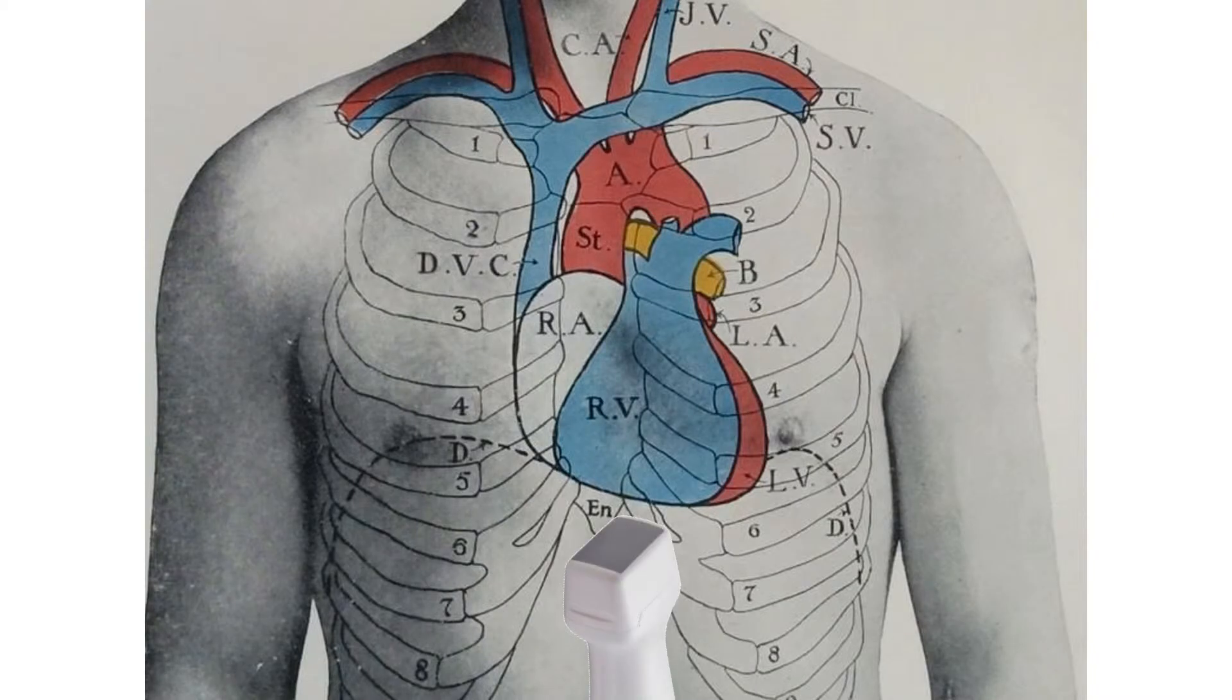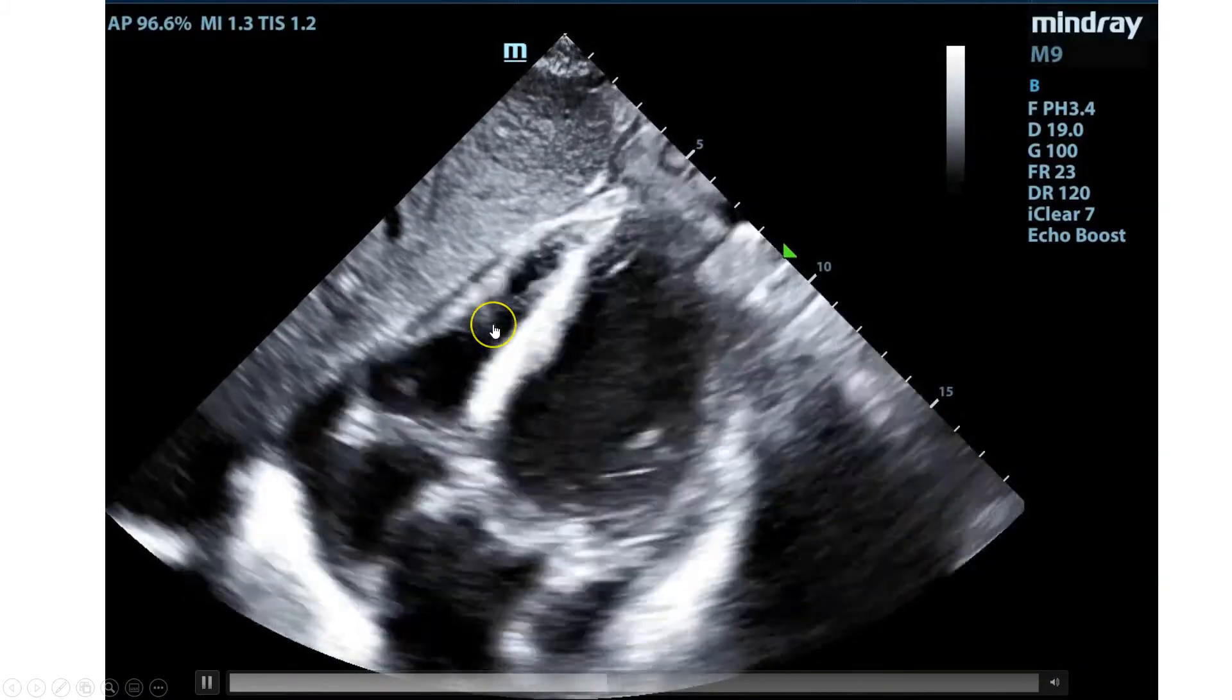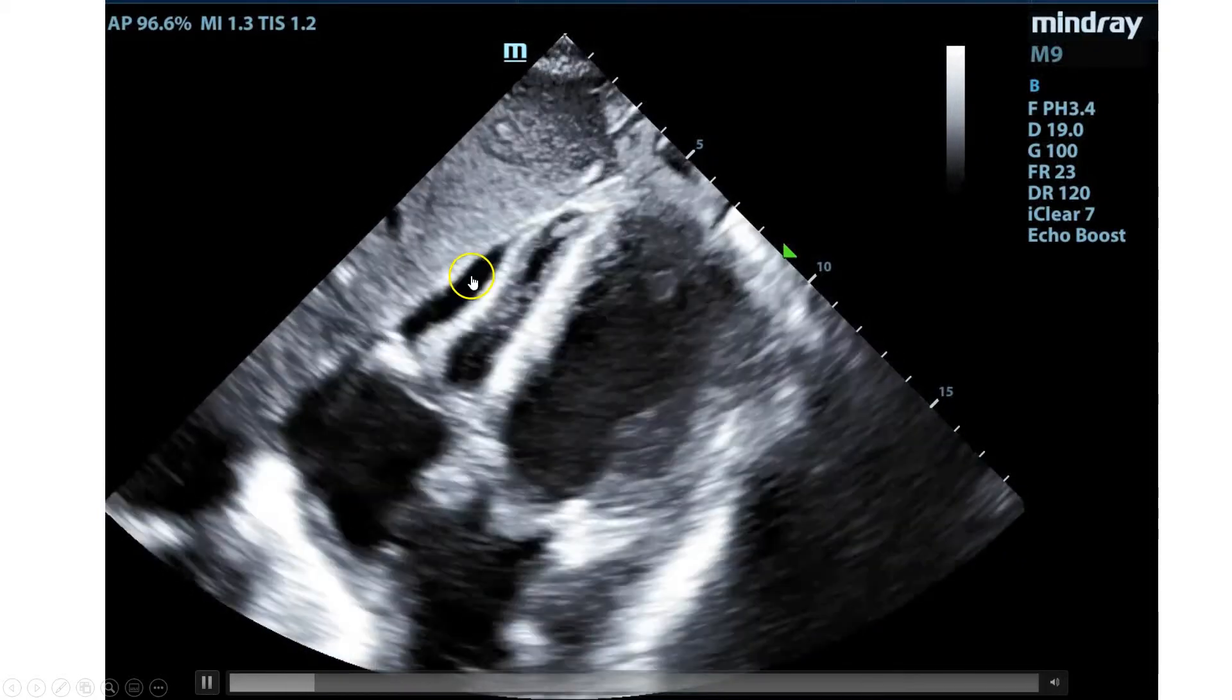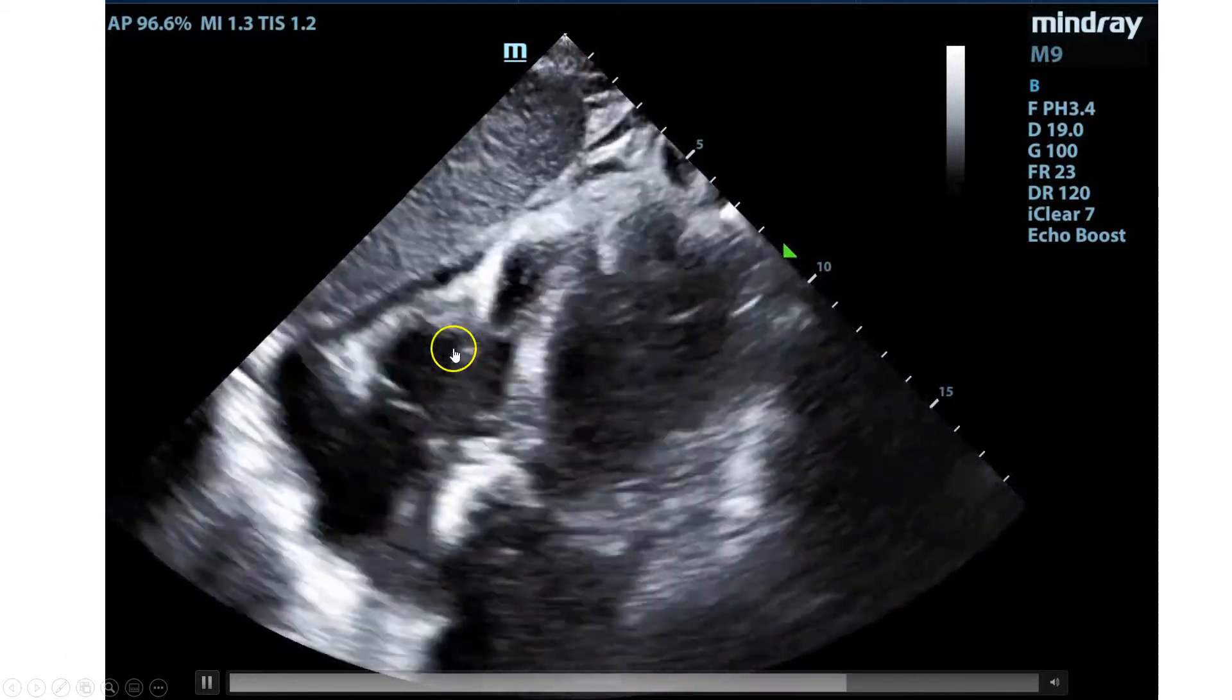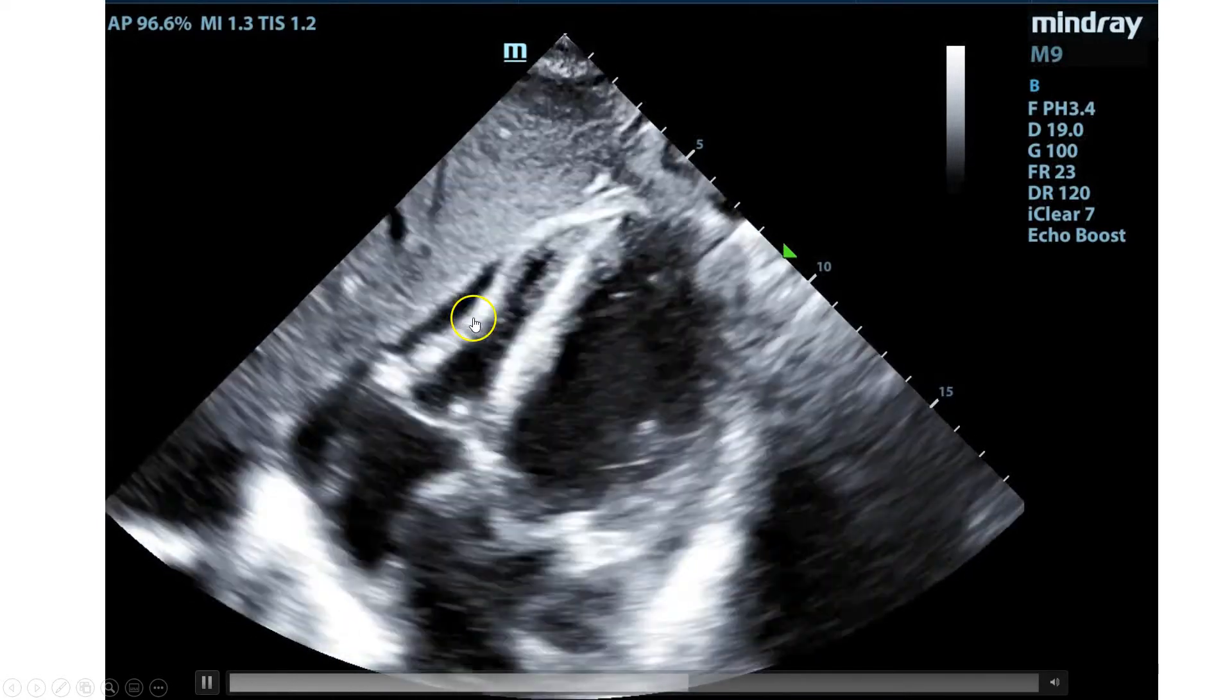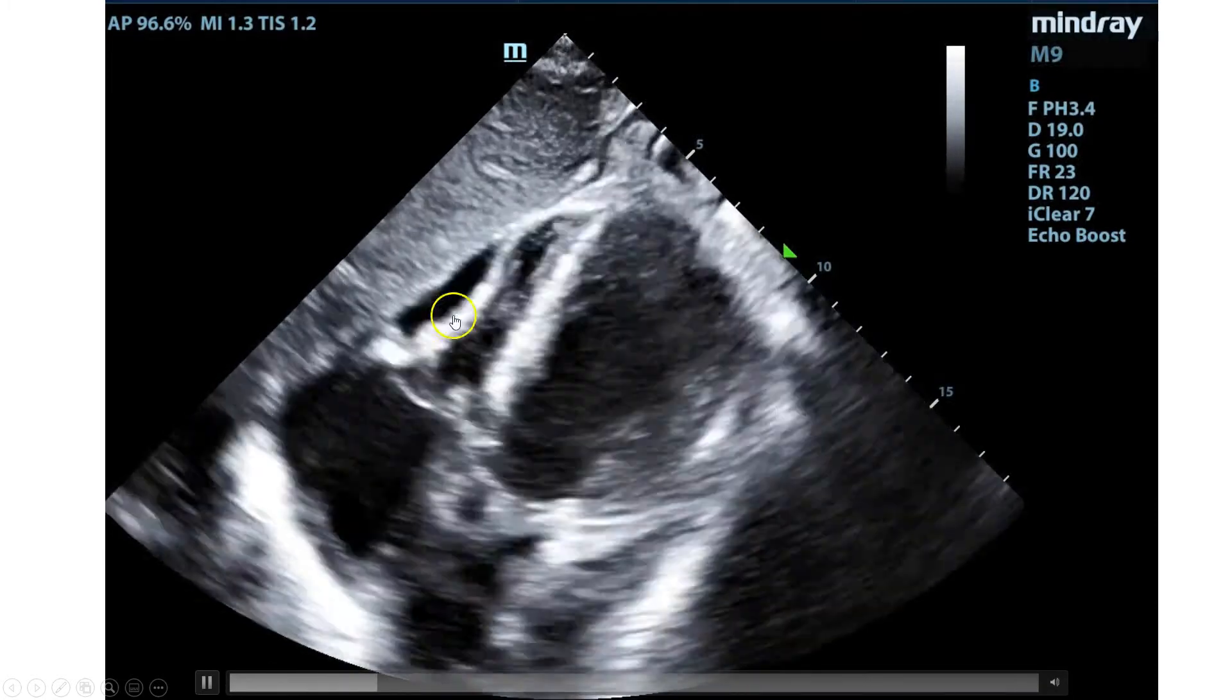And now finally, you get a sub-xiphoid view. So in the sub-xiphoid view, you put the probe right under the xiphoid process and you get this picture. Now, this picture is an example of what could be tamponade. You see an effusion. You see collapse of that right ventricle. And you're trying to figure out if that's in systole or diastole, which makes it challenging. I'm not going to tell you if this is tamponade or not. For that, you'll have to tune into the next round of lectures.